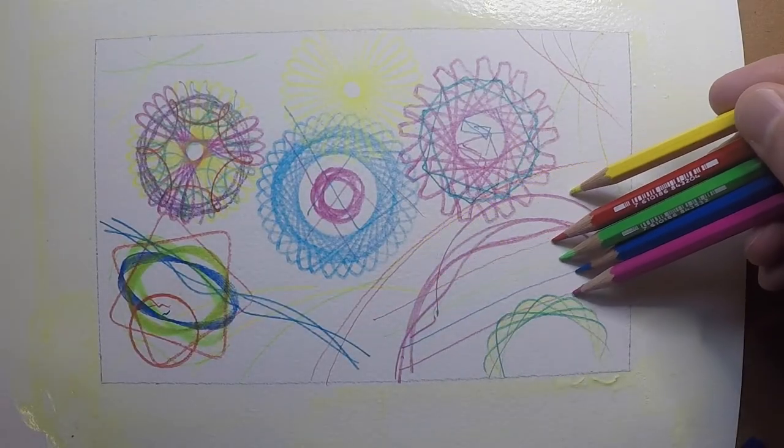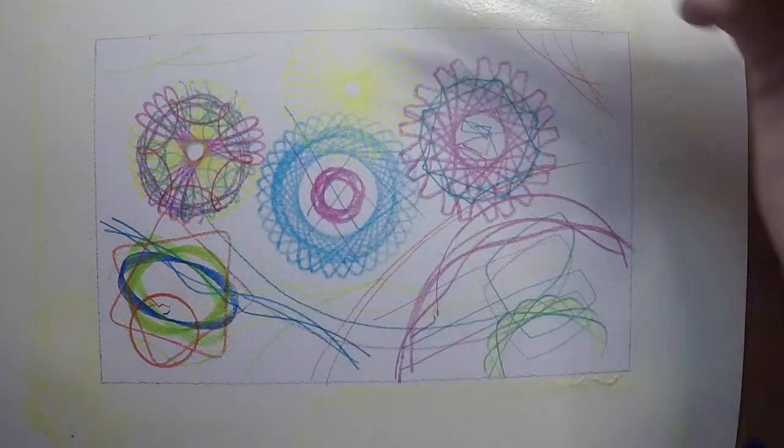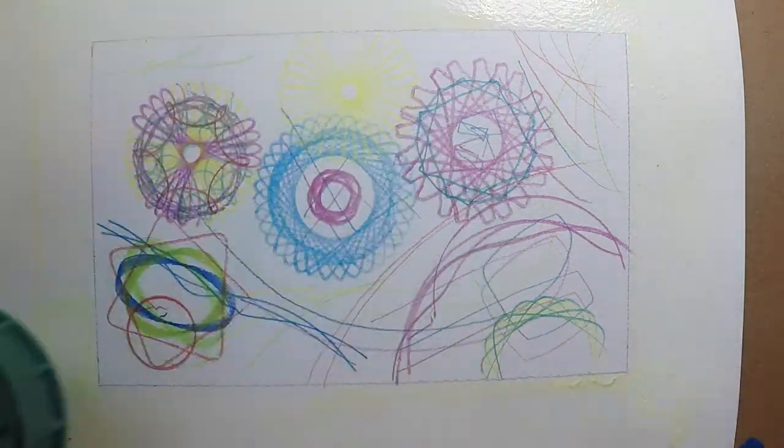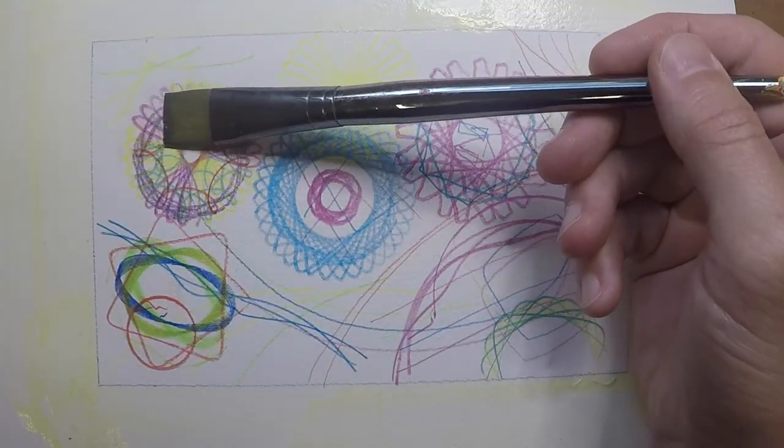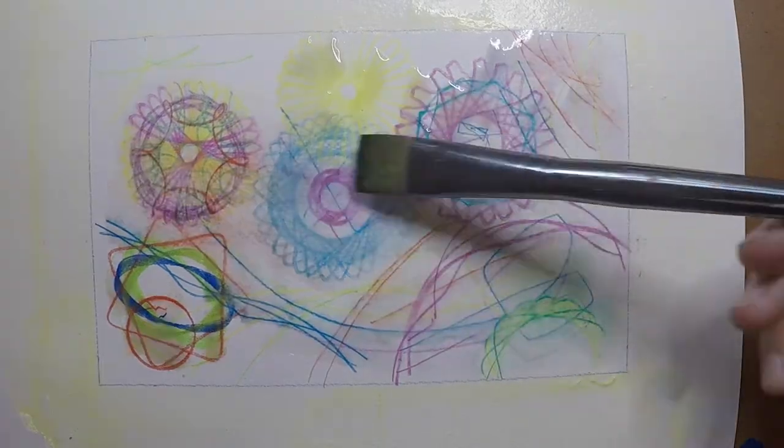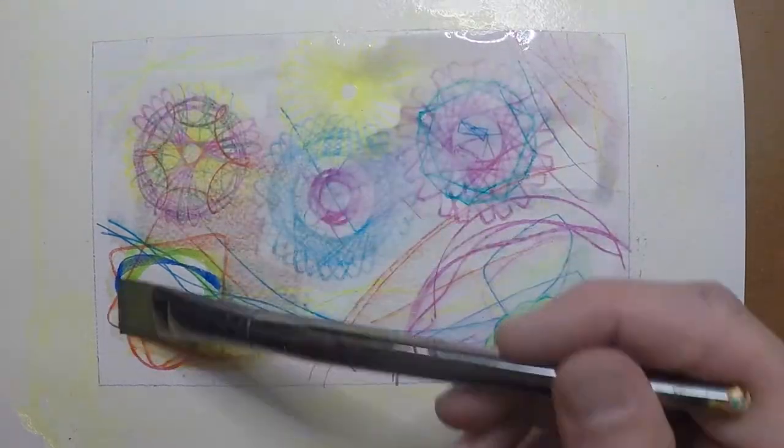So I ended up at this point just taking the colored pencils and trying to fill in some of the blank areas, and this is where I would say I made my second misstep. I should have continued to apply a lot more color and a lot more layers with the colored pencils, but in the moment I wasn't really thinking that way.